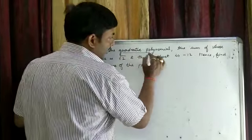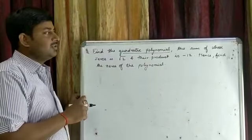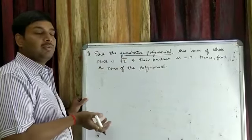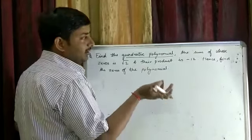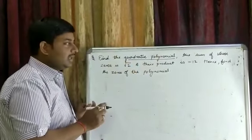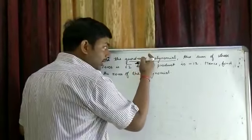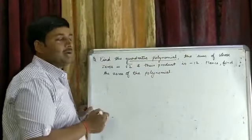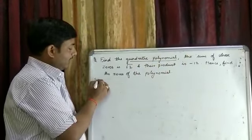Here you have to find the quadratic polynomial. In the previous question, the quadratic polynomial was given and you had to find the zeros. Here you find the quadratic polynomial when sum and product are given.